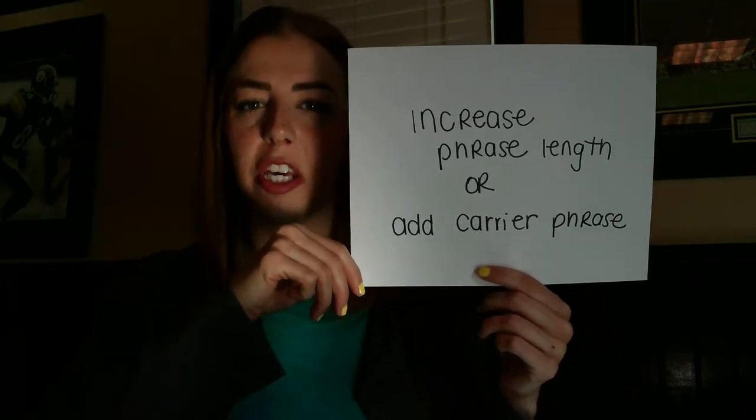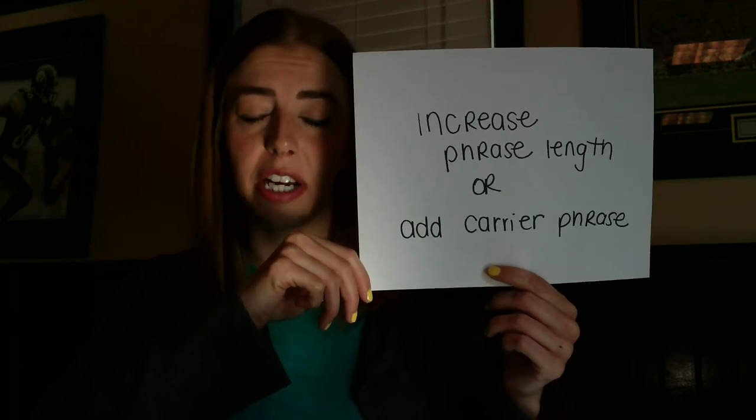Our last section is going to be increasing phrase length or adding a carrier phrase. For kids who are nonverbal, what you can do is add a carrier phrase to the item name. So you're going to tell your child, 'What is this? What do you have?' and you'd hope they say back 'I have toilet paper' or 'I have a comb.' You're going to want to prompt your child to say the full sentence and get their thought across fully.